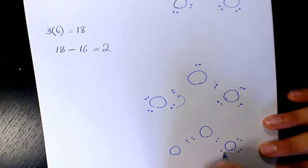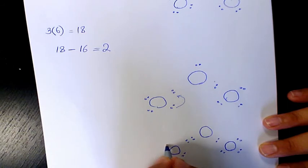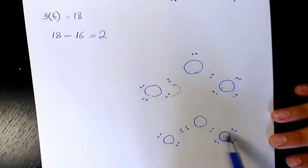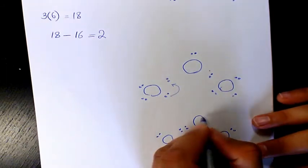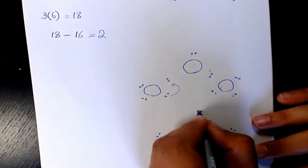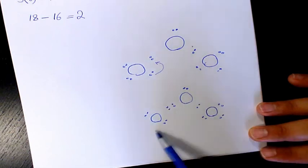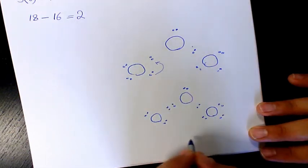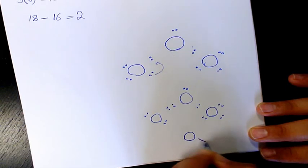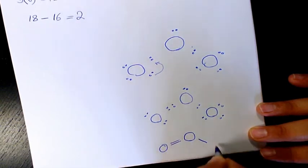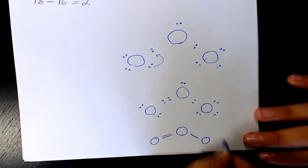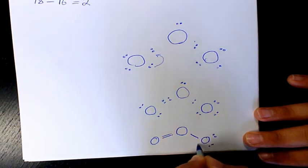So the rest remain the same. So as you see here, because the two structures are very similar, they're exactly the same thing. It is resonating. So it means that after we check the octet, 8, 8, and 8, we can put the bond in between with the lone pairs.